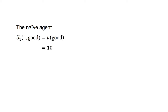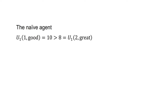But what happens when the naive agent is given the chance to change their mind after one week? At that time, the utility of the good movie today equals utility(good) equals 10. The utility of the great movie next week equals beta*delta*utility(great) equals 0.5 times 1 times 16, which equals 8. As the utility of the good movie today is greater than the utility of the great movie next week, the naive agent changes their mind and watches the good movie immediately.